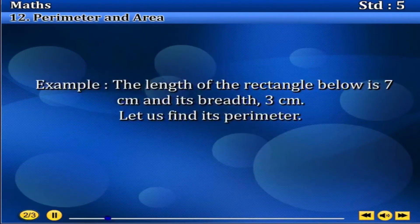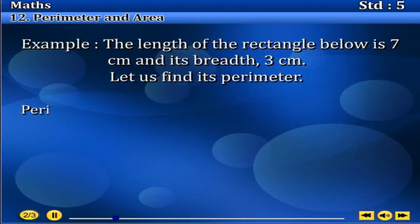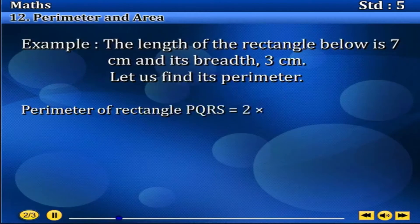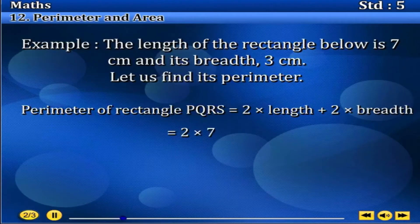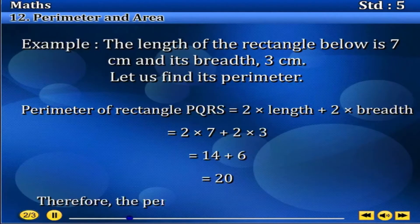Example. The length of the rectangle below is 7 cm and its breadth is 3 cm. Let us find its perimeter. Perimeter of rectangle PQRS equals 2 into length plus 2 into breadth, equals 2 into 7 plus 2 into 3, equals 14 plus 6, equals 20. Therefore, the perimeter of the rectangle is 20 cm.